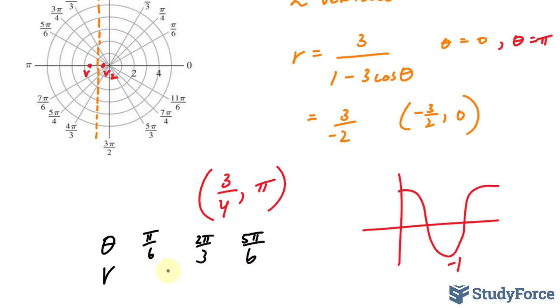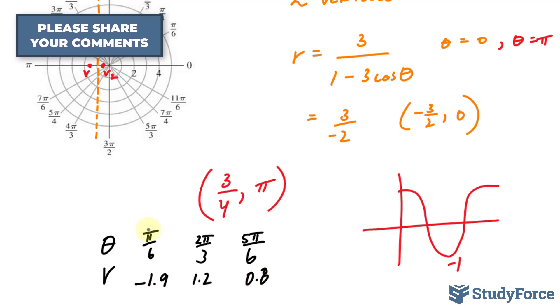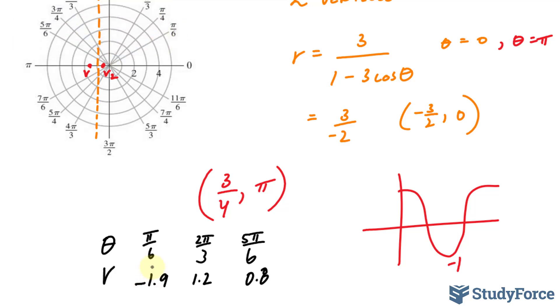The r values you should get if you substitute these into your equation are... So let's go ahead and plot these, starting with pi over 6. Pi over 6 is in this direction, but it's negative 1.9. So negative 1.9 means that we're going in the opposite direction. We'll have a point right there that takes care of that.